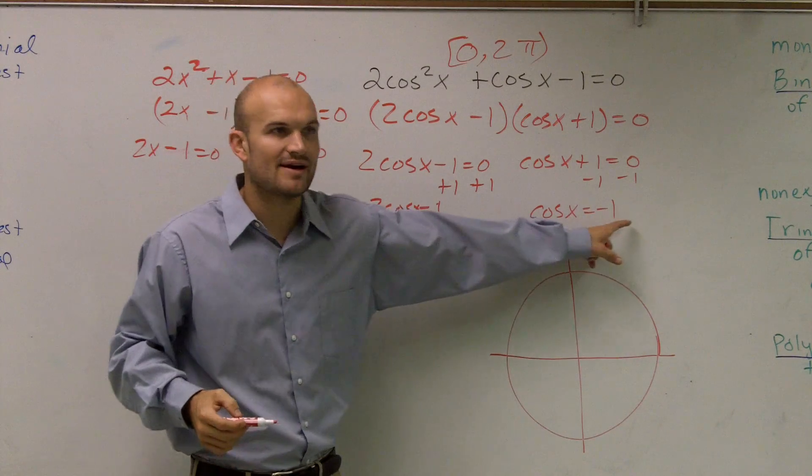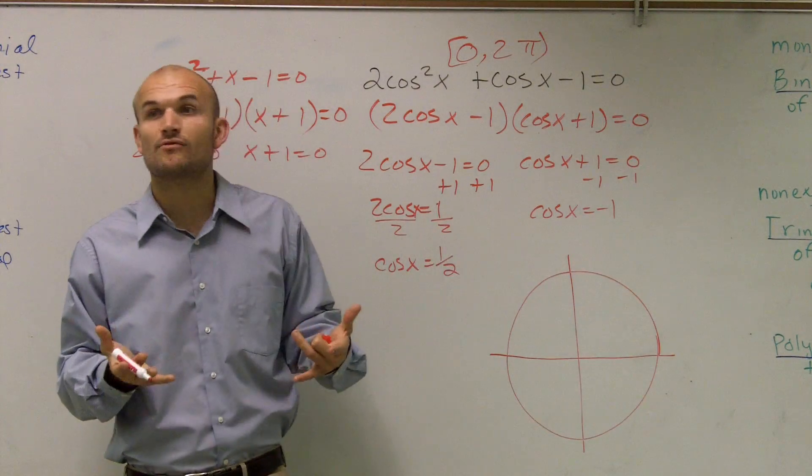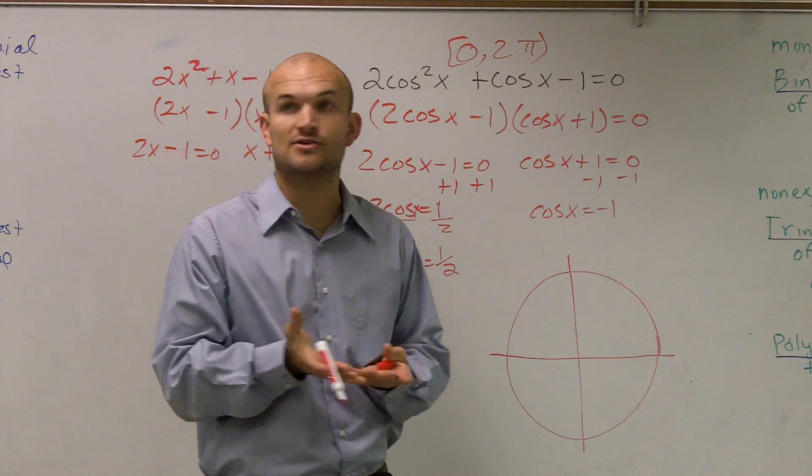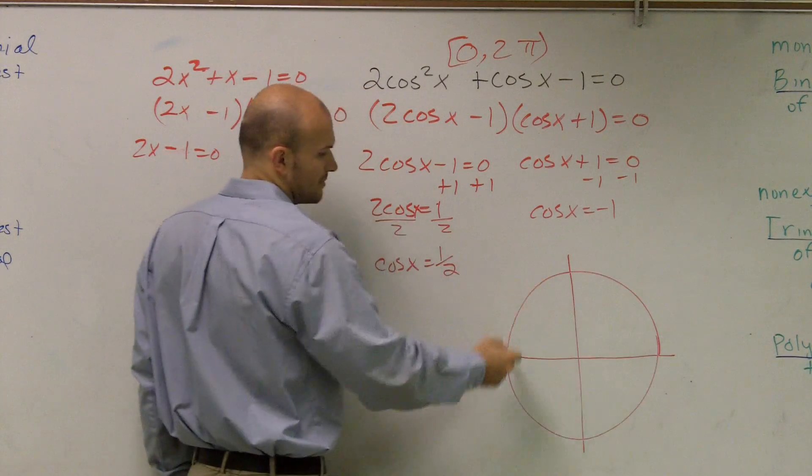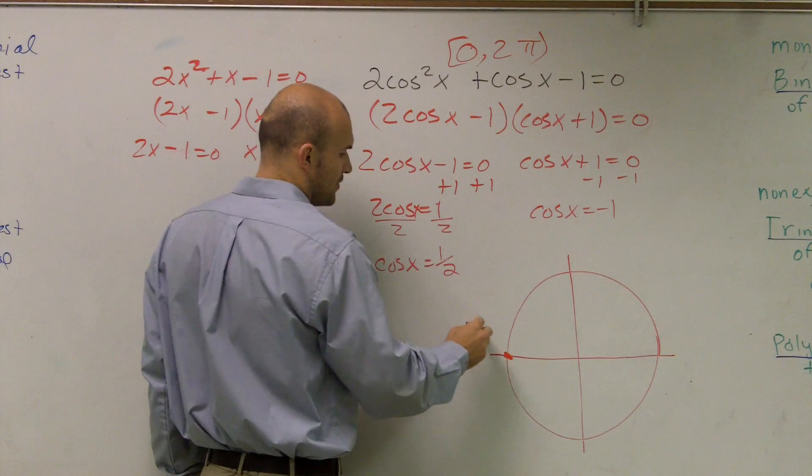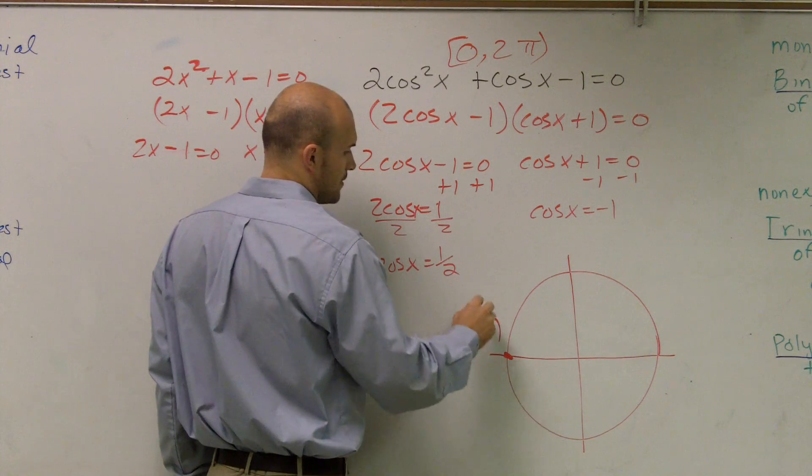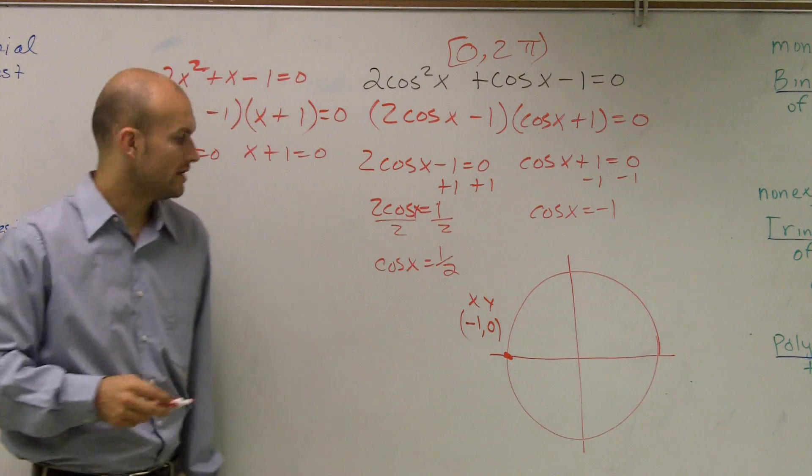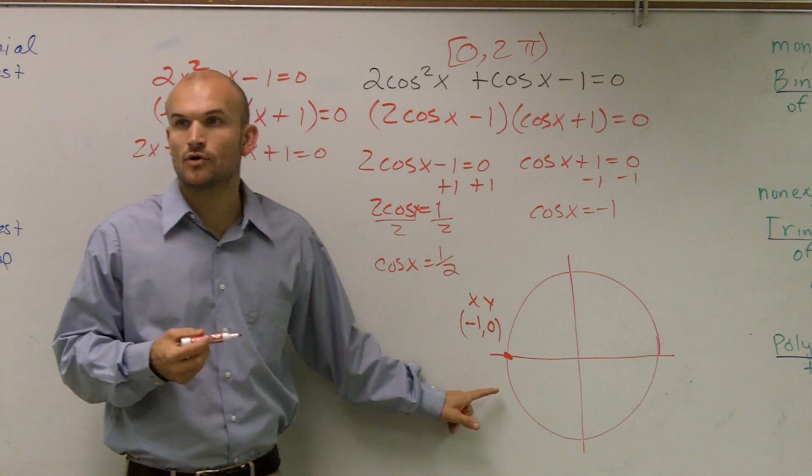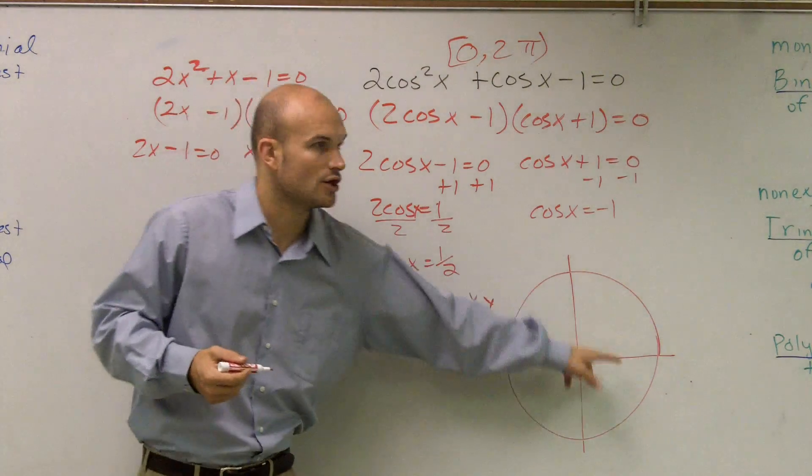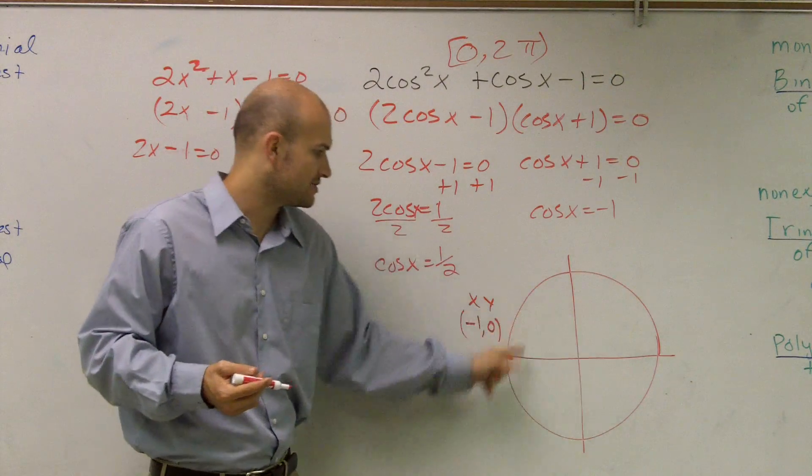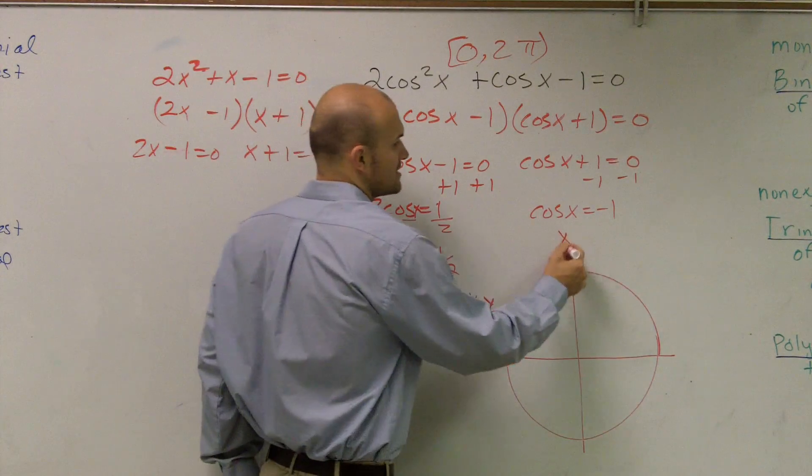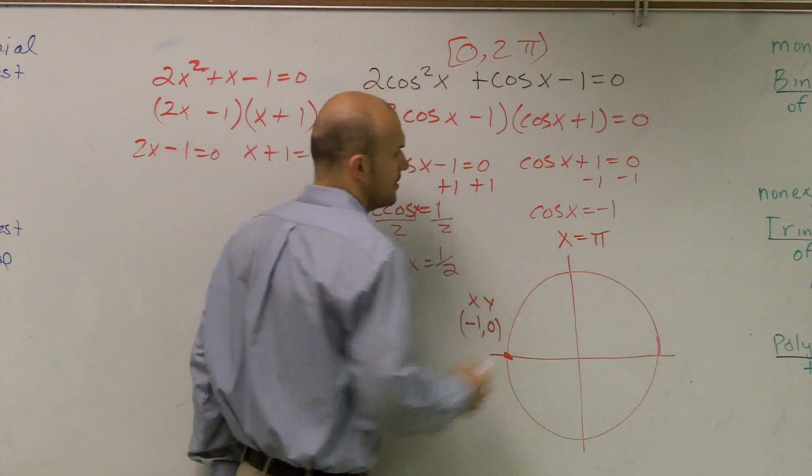And when is cosine of x equal to negative 1? Remember, cosine represents your x values of any point on the unit circle. So if I look at it, well, here, this point is negative 1, 0, where x is negative 1 and y is 0. There's no other point where x would equal negative 1, right? Right. So then I've got to look. Where is, what is this angle to get to this point? Well, I can say x now has to equal pi.